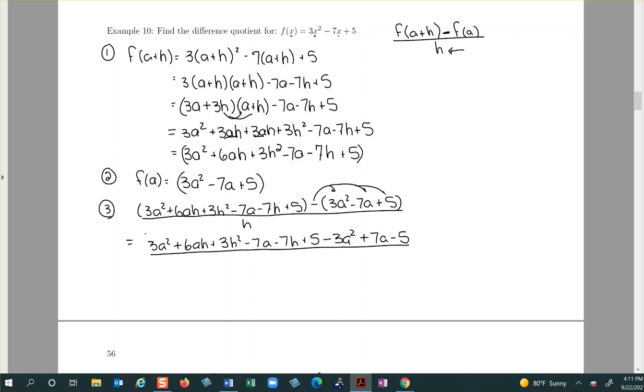All divided by h. And then I always start from the right and just cancel out all three of those terms. So the negative five and the positive five, a positive seven a and a negative seven a, negative three a squared positive three a squared.